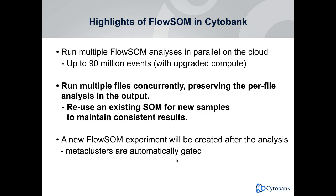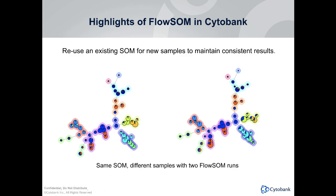Another important thing is that FlowSOM relies on a stochastic minimum spanning tree. There is randomness associated with it, which results in non-identical trees with potentially different branching structure each time you run it. In Cytobank, you can not only run multiple files concurrently, but also reuse an existing SOM for new samples to have consistent results. Here we show two samples for two different FlowSOM runs that share the same SOM — they have the same minimum spanning tree branches, so you can easily compare the differences between those two samples. You can see that some cell abundances are different, the size of clusters is different, and you can easily detect differences between the two samples, especially if you highlight them with functional markers.